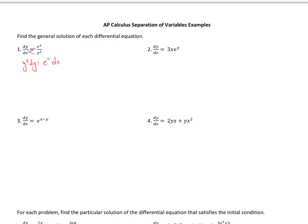I brought the y terms to one side and the x terms to the other. Now we want to get rid of the dy and dx by taking the antiderivative — integrating each side. On the left side we get one-third y cubed, and on the right side e to the x plus c. I only put plus c on one side since it's a constant for both.